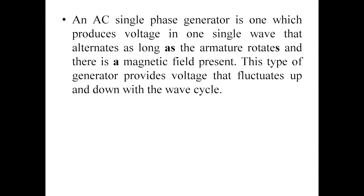An AC single-phase generator is one which produces voltage in one single wave that alternates as long as the armature rotates and there is a magnetic field present. This type of generator provides voltage that fluctuates up and down with the wave cycle. Now let us see generation of three-phase power.